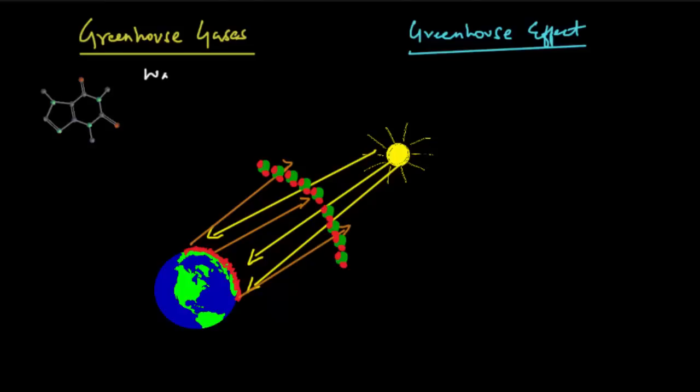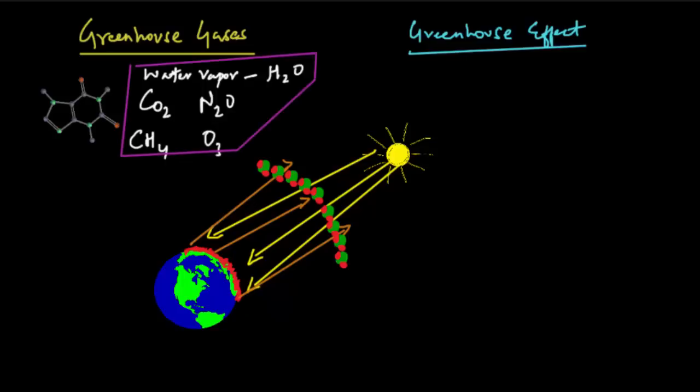So let me introduce you to the greenhouse gases, the primary greenhouse gases. They are water vapor, which is basically H2O. Then we have carbon dioxide, which is CO2, then methane, which is CH4, and then we have nitrous oxide, that is N2O, and then we have ozone, which is O3. If you notice, all of these compounds are made up of three or more atoms.